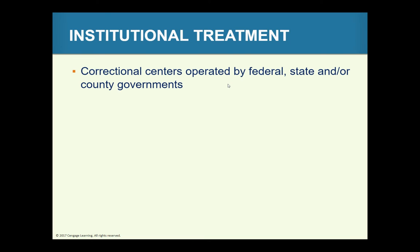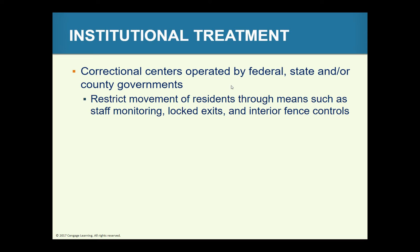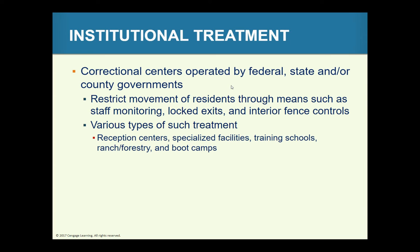Institutional treatment refers to correctional centers operated by federal, state, and county governments. They restrict the movement of residents with blocked exits and interior fence controls. Different facilities include reception centers that screen juveniles, specialized facilities for specific care, drug treatment, training schools, ranch or forestry camps, and boot camps.